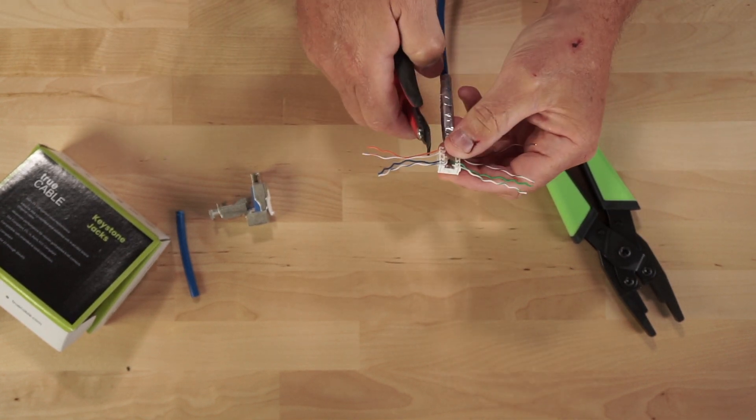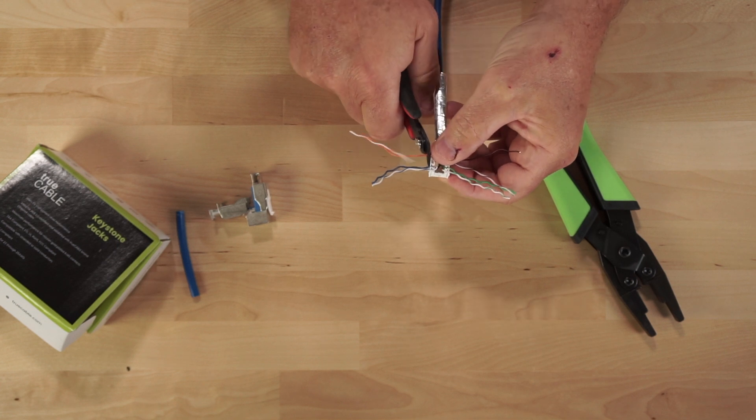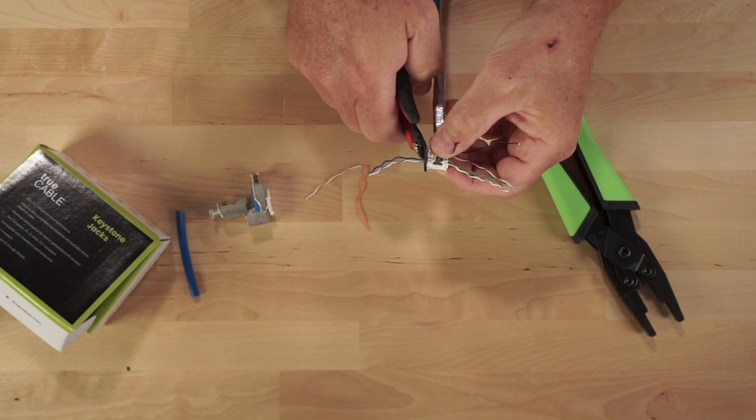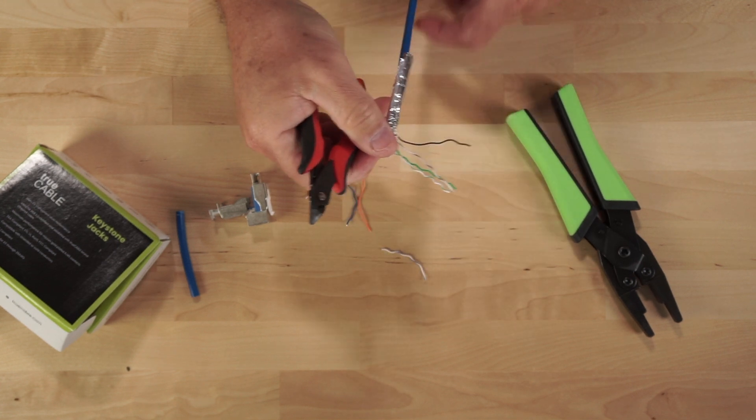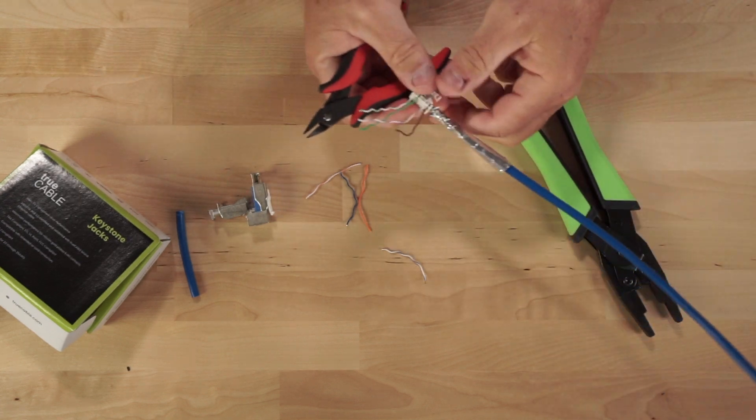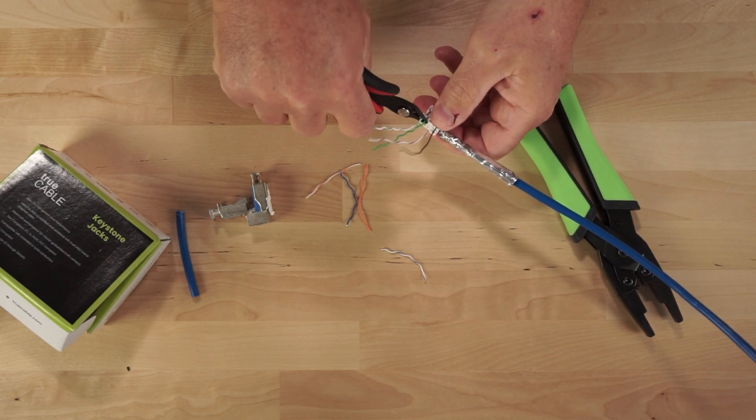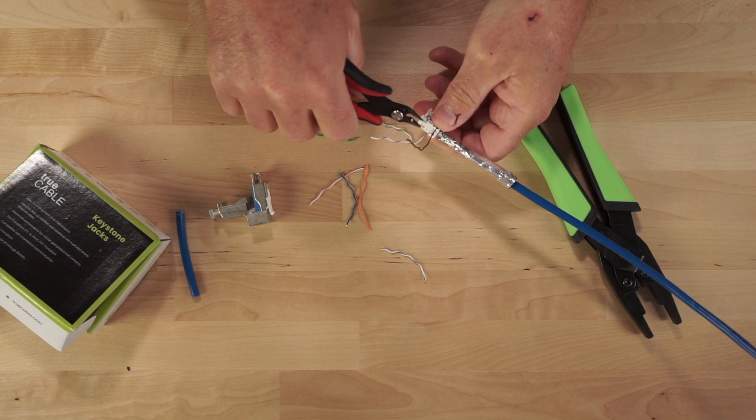So now what we're going to do is we're going to take our flush cutter and we're just going to make a nice clean flush cut on all the pairs, just like that.